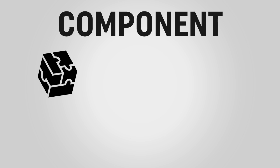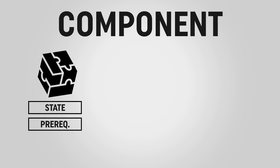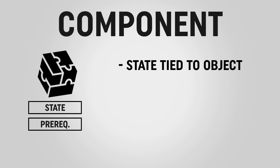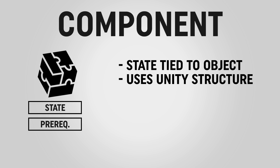With a component-based system, we would create a couple of C# scripts: one that creates a state component we can attach to any node, and a second prerequisite component that can also be added to any object that needs it. For the light switch, we'd add both the light switch's state and the prerequisite that the generator must be on. One of the biggest pros is that all states are tied to the object they affect, so you never have to wonder what a particular state is connecting to. It also makes great use of Unity's GetComponent capabilities.